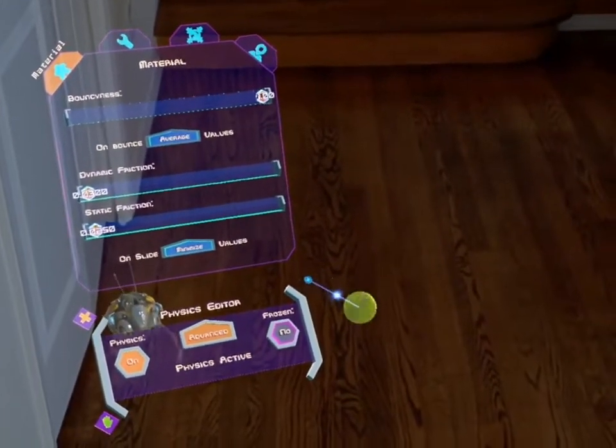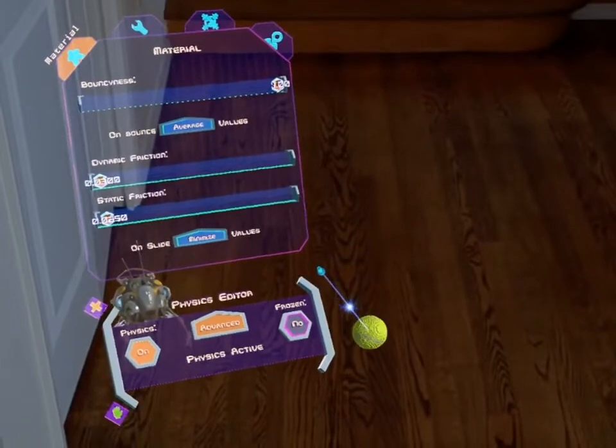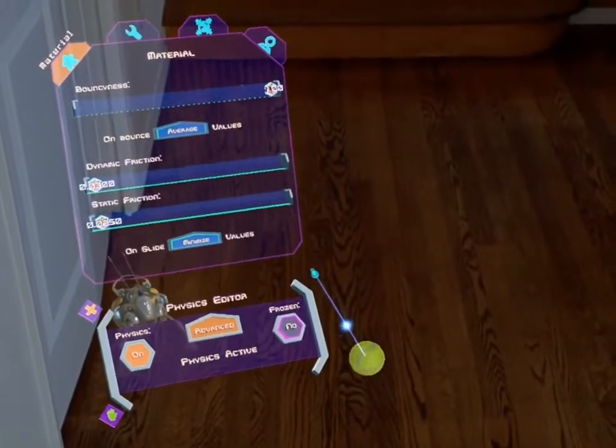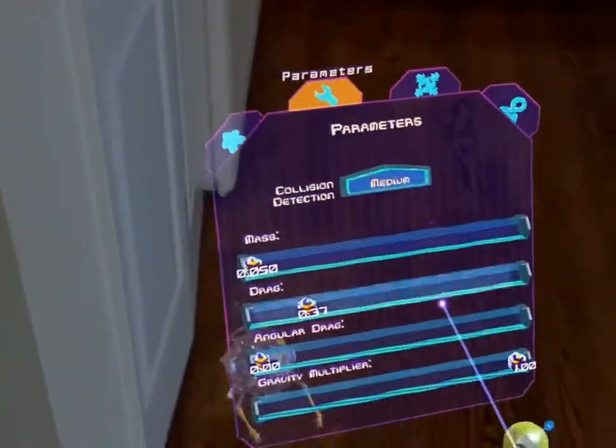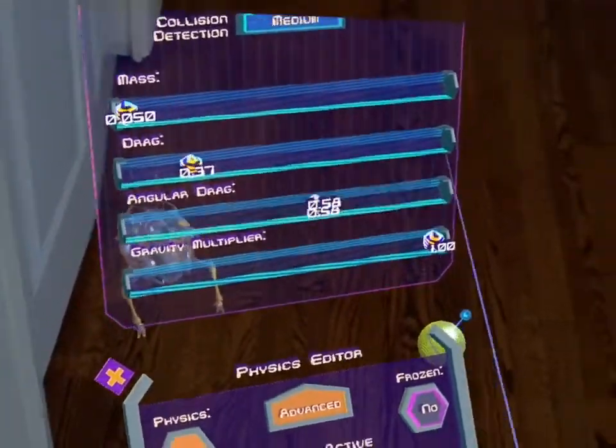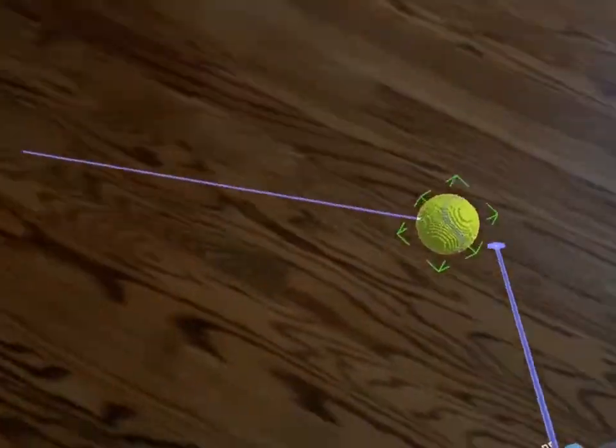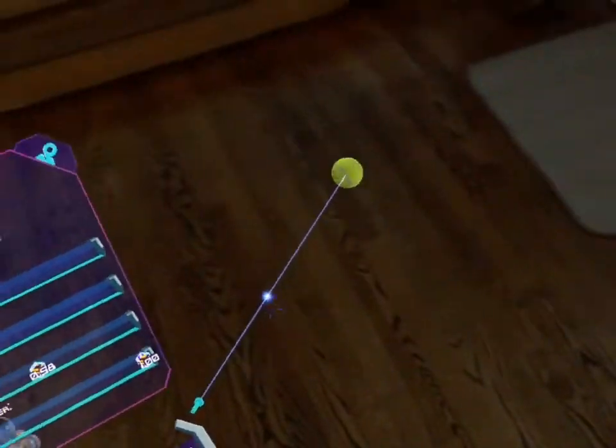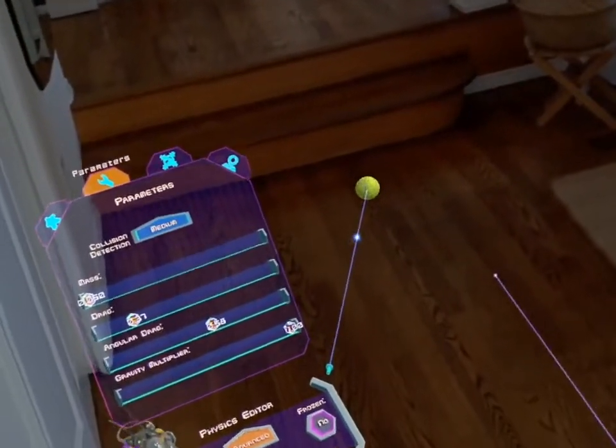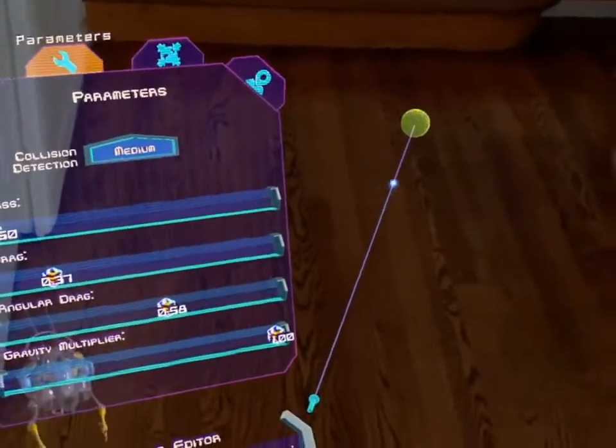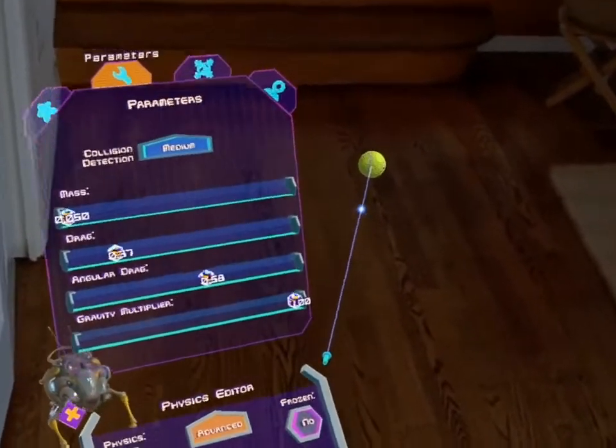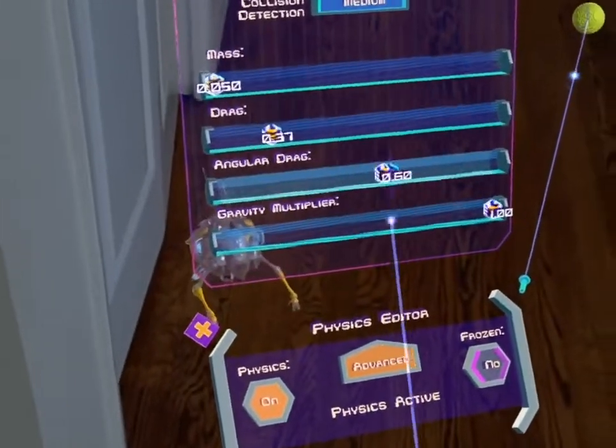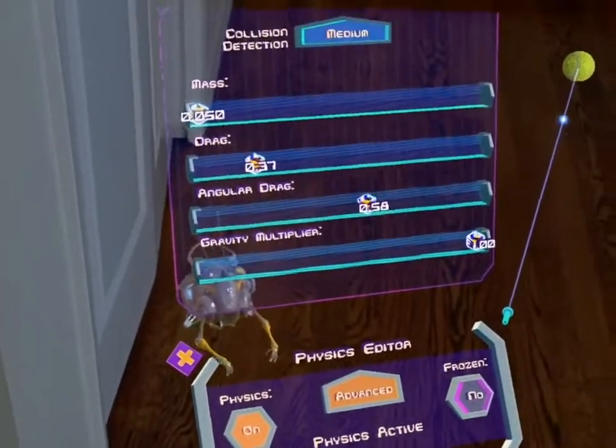Now if you notice that your ball really kind of takes forever to come to a stop, just like that, what you can do is simply increase the angular drag. That's something where the simulation differs from real life, because friction should take care of the ball coming to a stop. But it's a computer simulation, so we help it a little bit by giving it a little bit more angular drag.